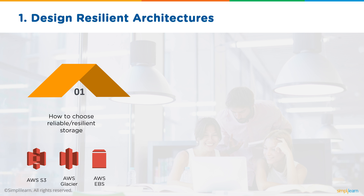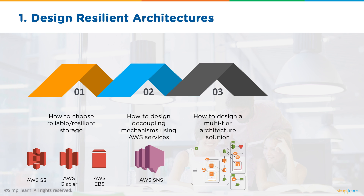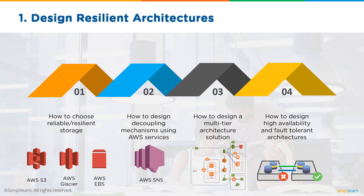The first domain — designing resilient architectures — covers four areas: choosing reliable or resilient storage using services like AWS S3, AWS Glacier, and AWS EBS; designing decoupling mechanisms using services like AWS SNS; designing multi-tier architecture solutions; and designing highly available and fault-tolerant architectures.